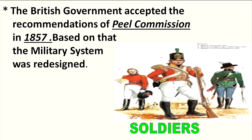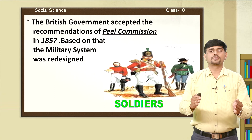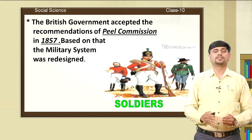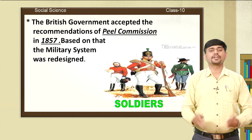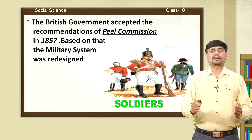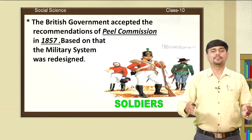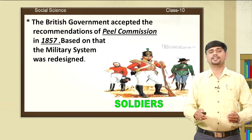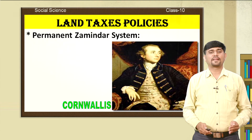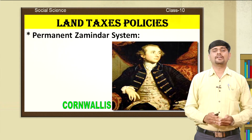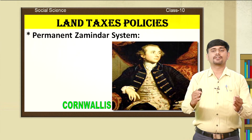However, the British government accepted the recommendations of the Peel Commission in 1857. After the first war of Indian independence, there were a number of changes brought to the Indian military system. The Peel Commission recommended some changes, and based on that, the military system was redesigned in India.